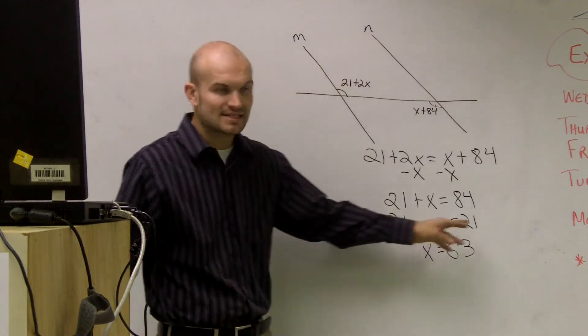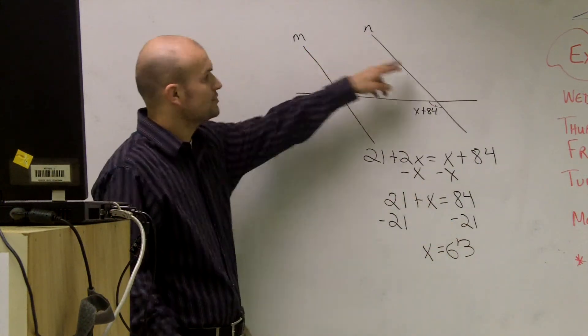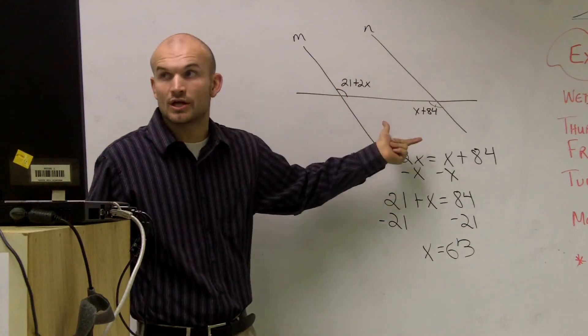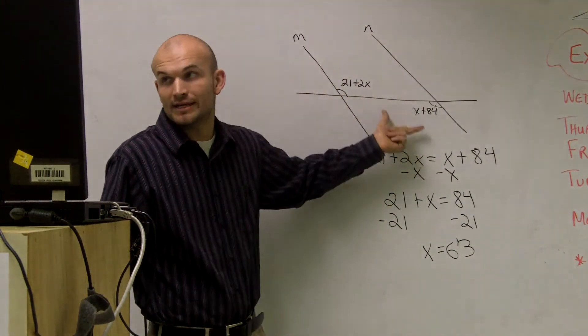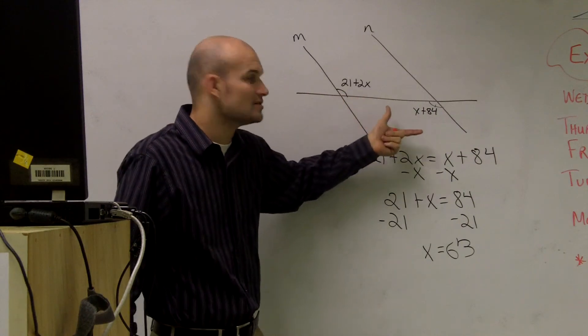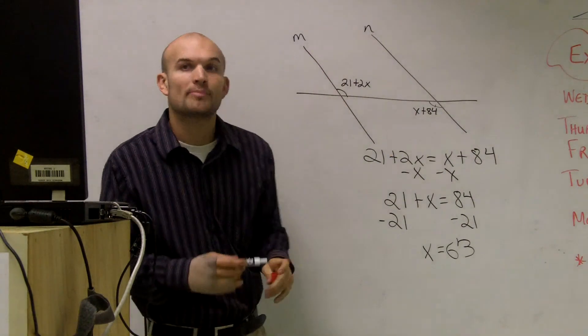Therefore, when x equals 63, these two angles are equal to each other. And since these two angles, when equal to each other, are alternate interior angles, we have m and n are parallel lines.